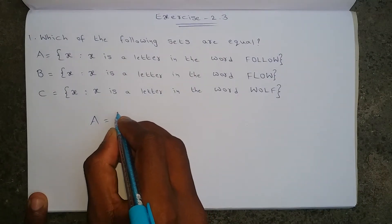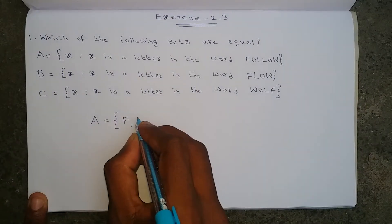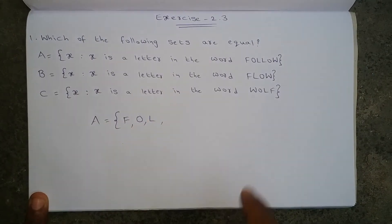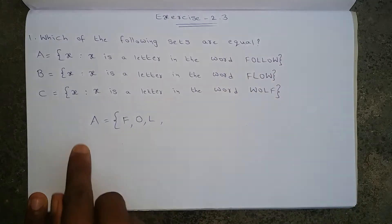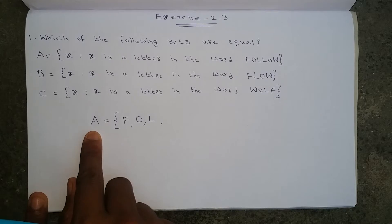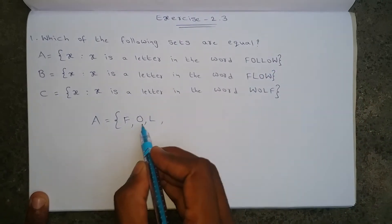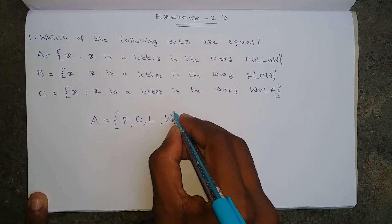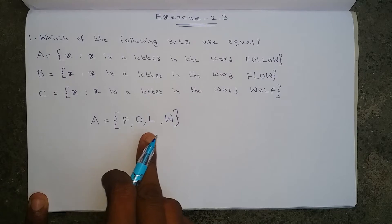So what will set A become? The letters are F, O, L. In FOLLOW, L appears two times but according to the set definition no element should be repeated, so we write L only once. O is already written, so we do not write it again. The remaining letter is W. So set A equals {F, O, L, W}.